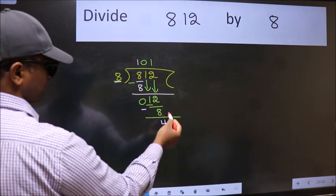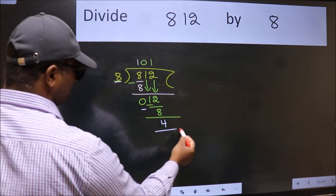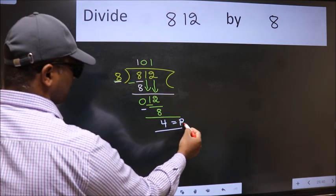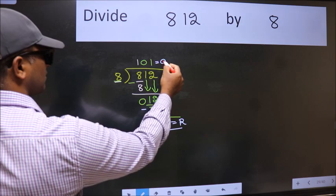No more numbers to bring it down. So we stop here. This is our remainder and this is our quotient.